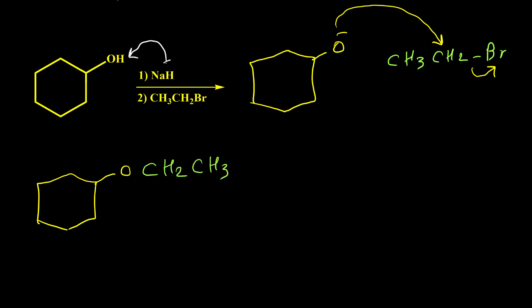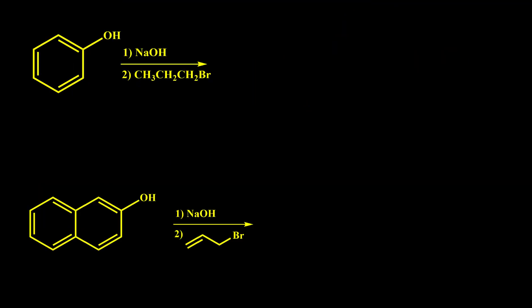If instead of an alcohol we have a phenol, we don't need to use a very strong base like sodium hydride. A normal base like sodium hydroxide or potassium hydroxide works perfectly. Let's look at examples for phenols. In the first step, sodium hydroxide easily deprotonates the phenol to give the phenoxide anion.